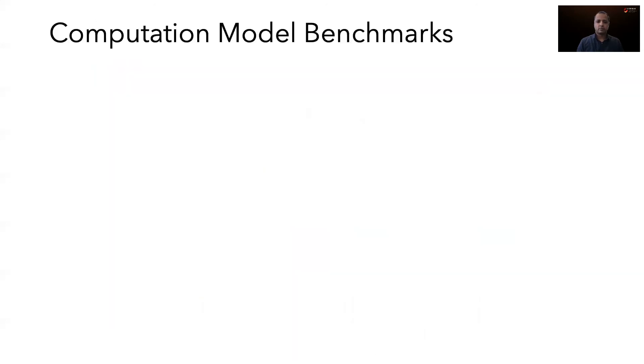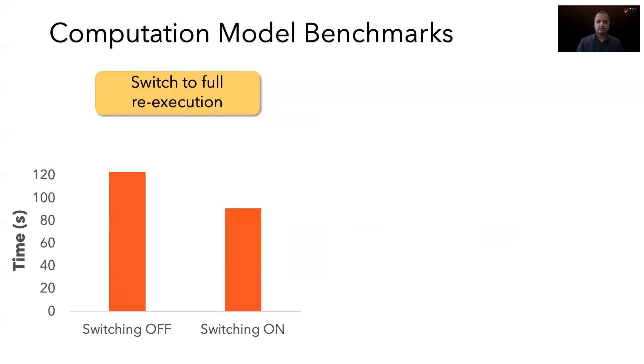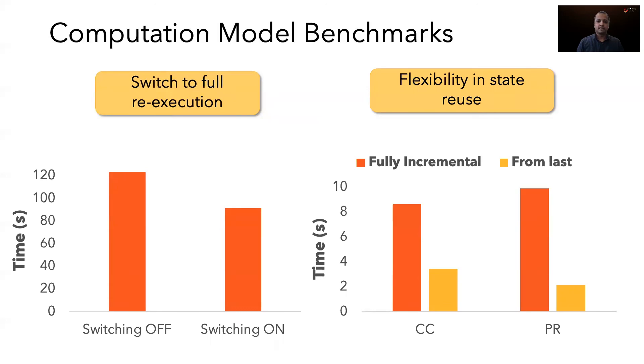Finally, we show microbenchmarks that evaluate the flexibility of Tegra's computation model. First is the ability of Tegra to switch to full re-execution when incremental computations are not useful. We create such a scenario by deleting vertices and edges in the largest component of the Twitter graph. We see that when switching is turned off, incremental computation takes more time, and Tegra is able to identify this inefficiency and switch. Second is the flexibility in which state to reuse for doing computations. For monotonic computations, for example, additions only to the graph, many algorithms can be bootstrapped from the last answer. Since Tegra can start from any snapshot, it can simply use the last snapshot in time-lapse to achieve much faster convergence.